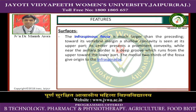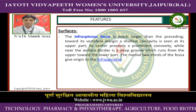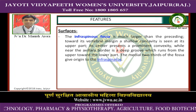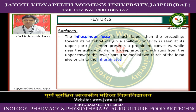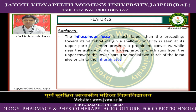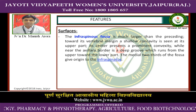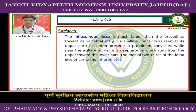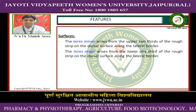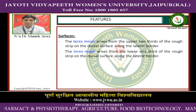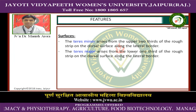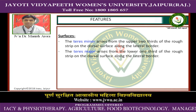The infraspinous fossa is much larger than the preceding. Towards its vertebral margin, a shallow concavity is seen at its upper part. Its center represents a prominent convexity, while near the axillary border is a deep groove which runs from the upper toward the lower part. The medial two-thirds of the fossa give origin to the infraspinatus. The teres minor arises from the upper two-thirds of the rough strip on the dorsal surface along the lateral border. The teres major arises from the lower one-third of the rough strip on the dorsal surface along the lateral border.